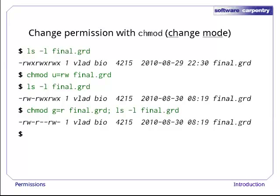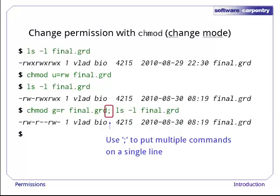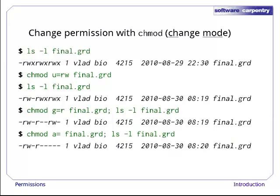Let's run chmod again to give the group read-only permission and then display the results. Notice that we've put two commands on a single line — we can do this as long as we separate them with a semicolon. Finally, let's give all — everyone on the system who isn't the file's owner or in its group — no permissions at all. The A signals that we're changing permissions for all, and since there's nothing on the right of the equals, all's new permissions are empty.